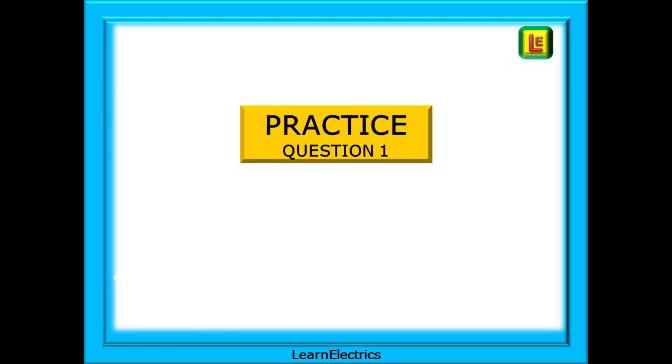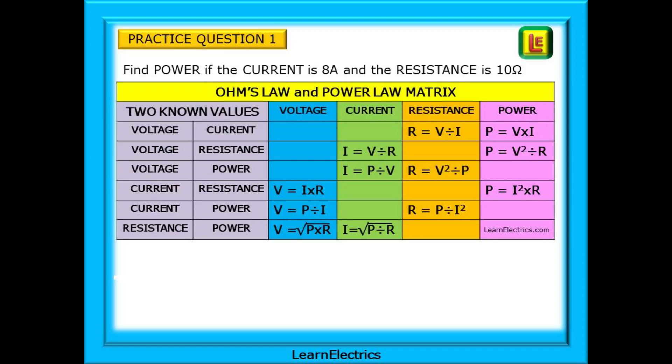A little practice now. Four questions for you to attempt yourselves. Pause the video on each slide and attempt the calculation. Answers will be on the next slide following. First question: Find the power if the current is 8 Amps and the resistance is 10 Ohms.